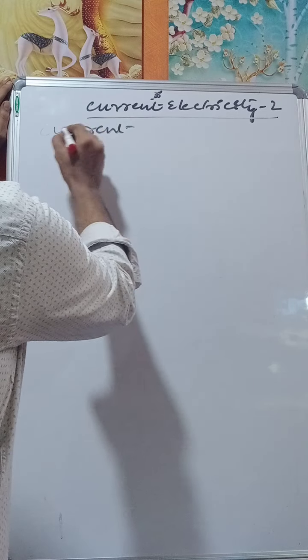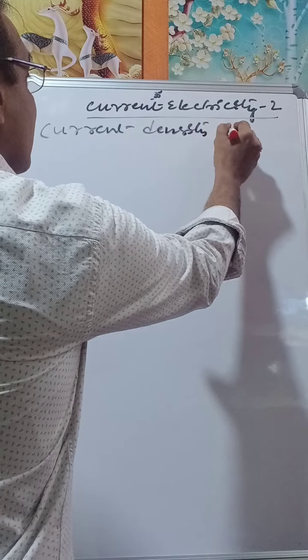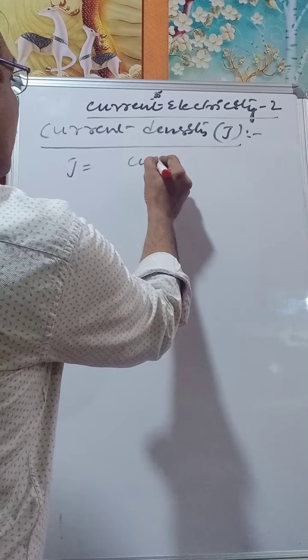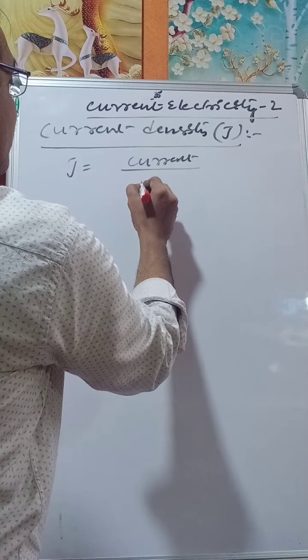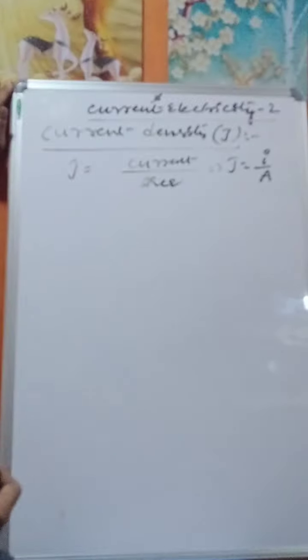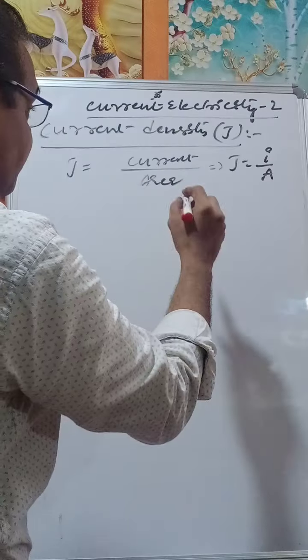Yesterday in Part 1, we discussed what current is and its different formats. Now let us discuss what is current density. Current density is generally represented by the letter J. It is defined as the amount of current passing through a unit cross-sectional area. So J is equal to I by A.